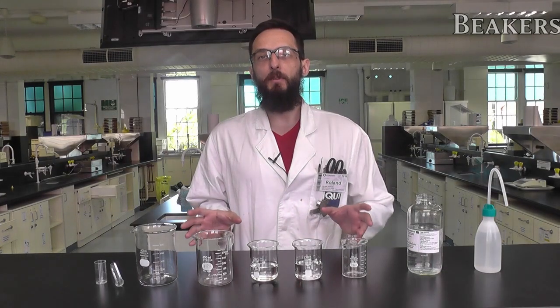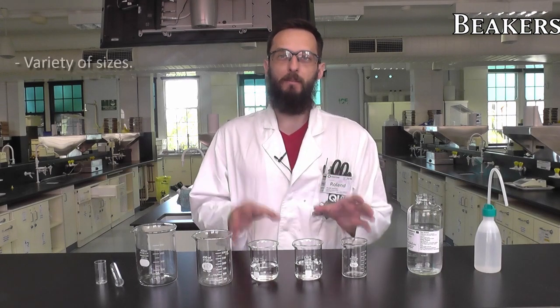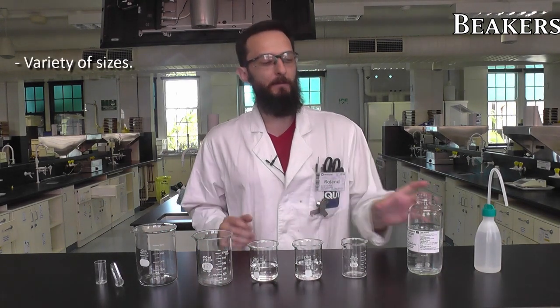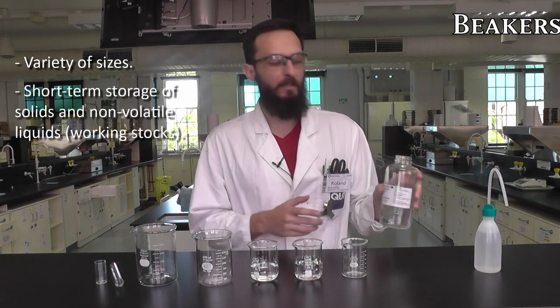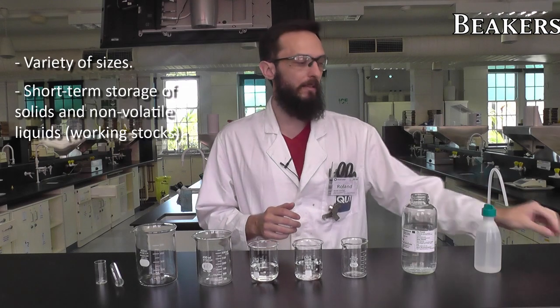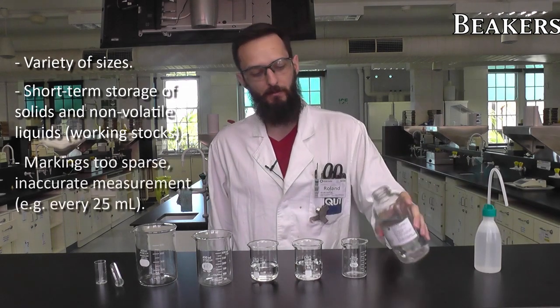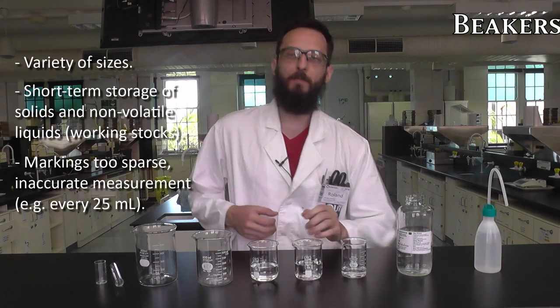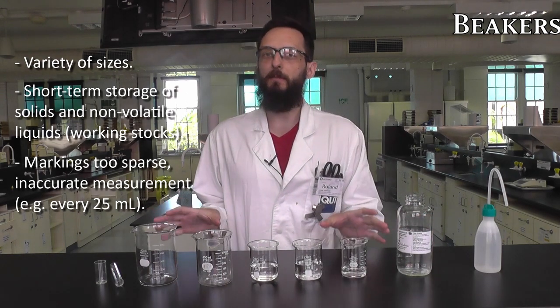Beakers are some of the most common glassware you'll find in the laboratory. They're nice because they come in a variety of sizes, and they're good for short-term storage of chemicals. If I have a nice expensive stock of chemical, I really don't want to stick anything into there that might potentially contaminate it. So we can take that stock bottle and just pour out into a beaker and use that as our working solution for the experiment. Beakers are also nice because they're very easy to clean.